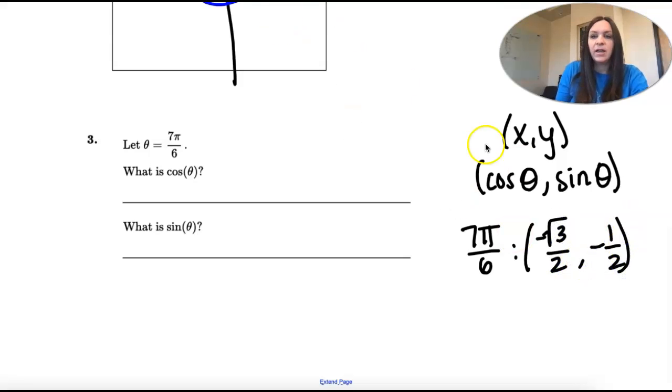So cosine or x is negative square root of 3 over 2. Sine or y is negative 1 half. And that's it. These questions are just confirming that you know that x is cosine and y is sine.